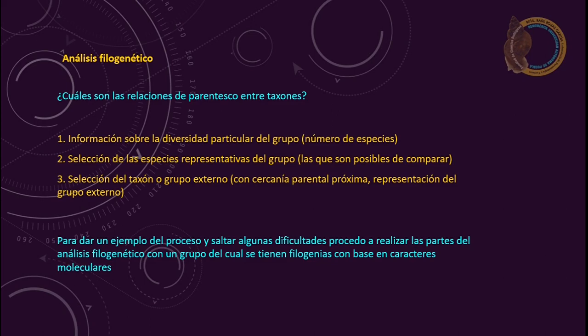We have to select the ones that are possible to review at the time of doing the phylogenetic analysis — we have to review the characters. Another very important thing highlighted here is the selection of the external taxon or outgroup, which should have a close proximity, preferably a closely related group of other groups, with a very close kinship relationship.